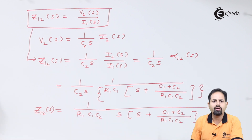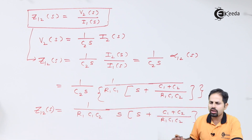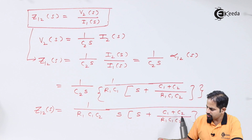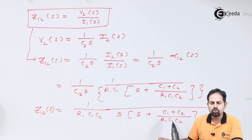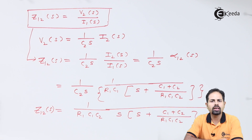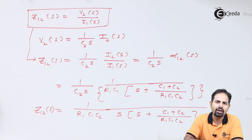If specific values of C and R are provided — for example, if all values equal 1 — then C1+C2 = 2, and Z₁₂(s) simplifies to something like 1/[s·(s+2)]. Using inverse Laplace transform we can very easily obtain the time-domain solution. That is the end of this problem. Please subscribe to Ikeda, thank you very much.